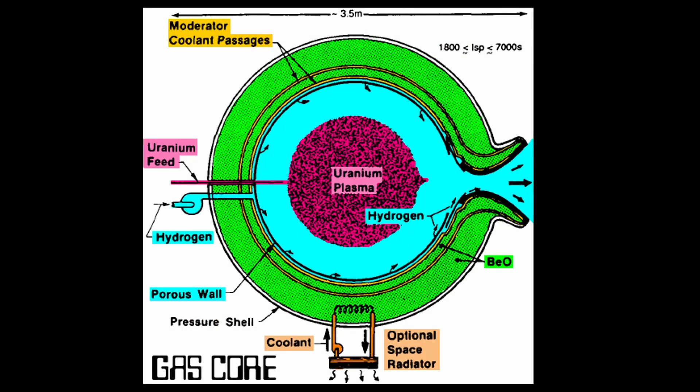Rather than spending engineering effort trying to keep our reactor core cool, let's let it get as hot as it wants. Conceptually, this is fairly simple. You have something like a combustion chamber that you inject uranium hexafluoride into, and it starts fissioning and creates a uranium plasma.